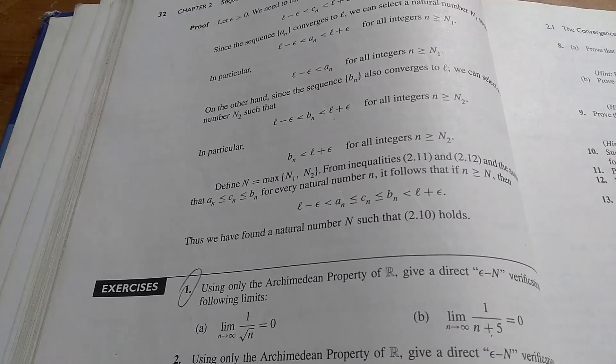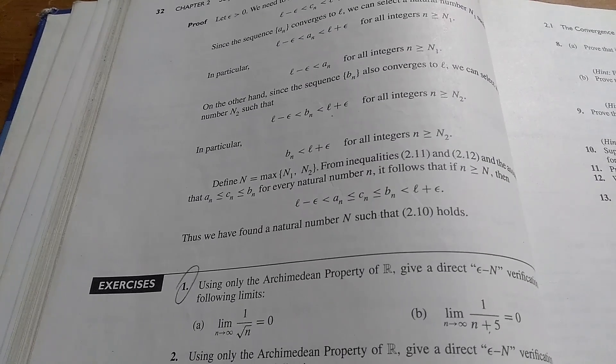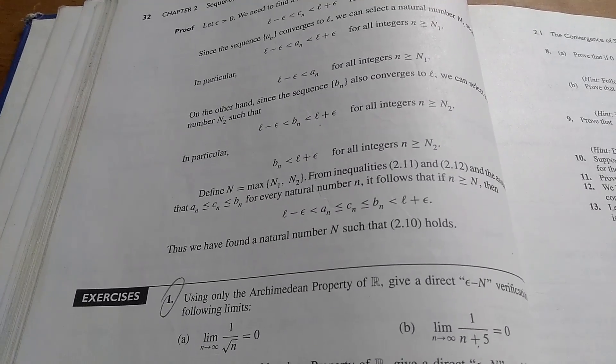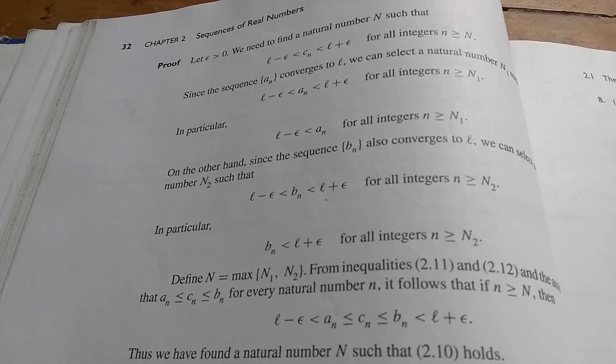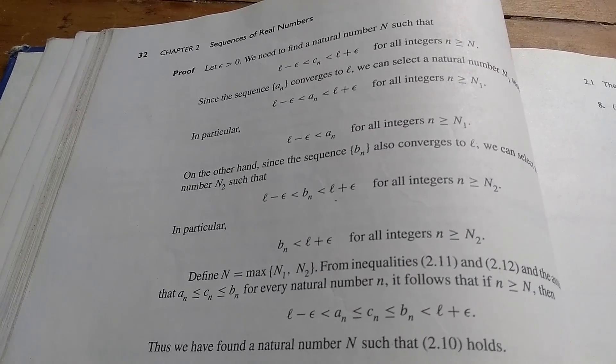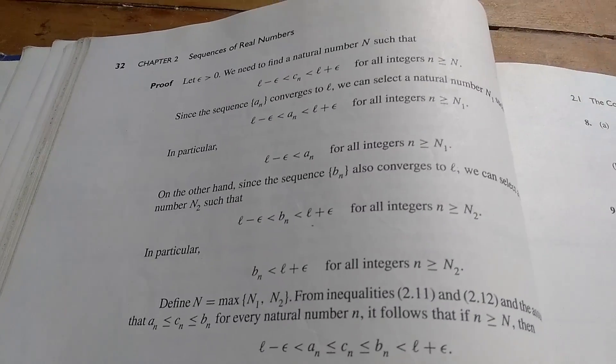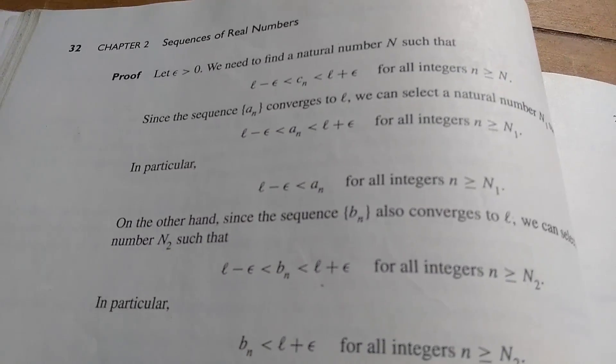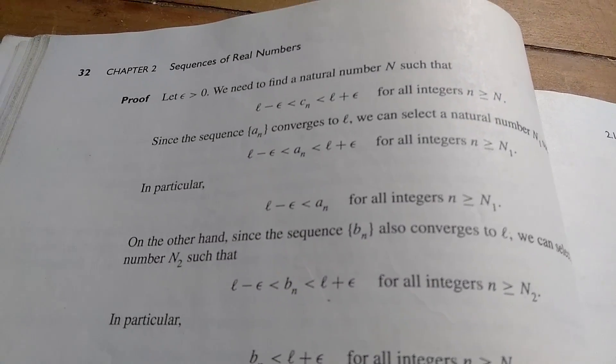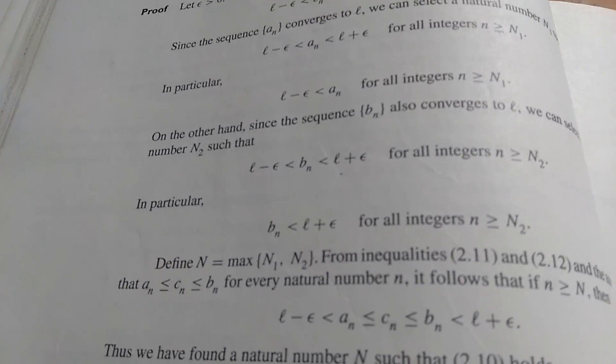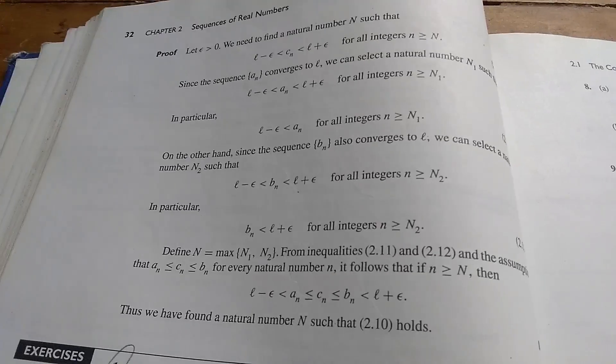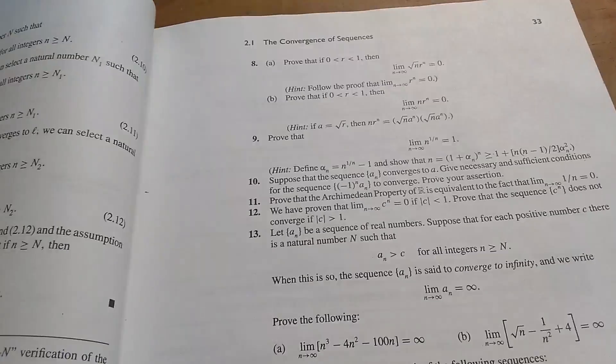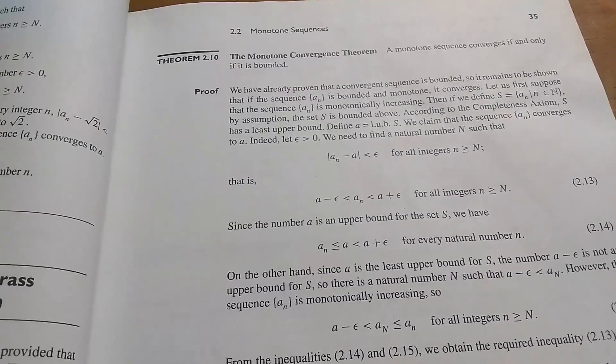I think the negative is that a lot of the proofs, while they are correct, and they are rigorously written, I feel like you as the reader can do a better job. And I think that the author, when they're writing the proofs, they try to be really correct, which is fine. But I feel like it's overdone in some sense. So when you find yourself writing these proofs, you'll find that a lot of it can be stated in your own words.